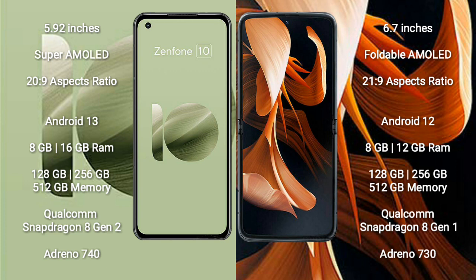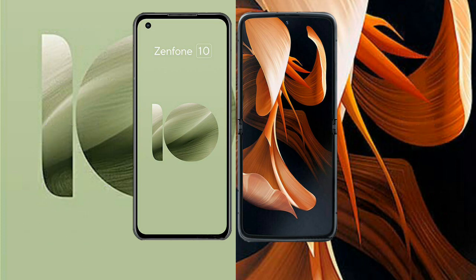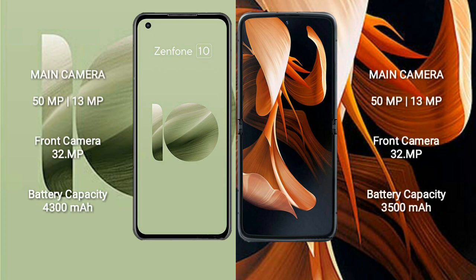Motorola Razr 1 comes with 8GB RAM and 128GB to 256GB or 512GB internal storage, powered by the Qualcomm Snapdragon 8 Gen 1 processor with Adreno 730 GPU.